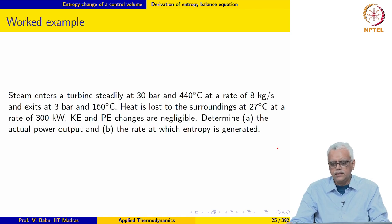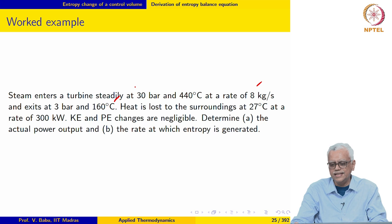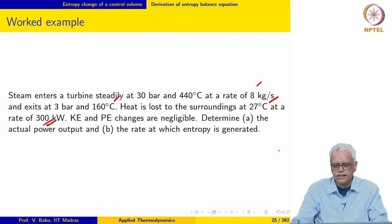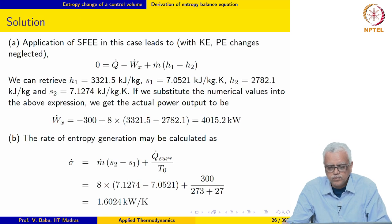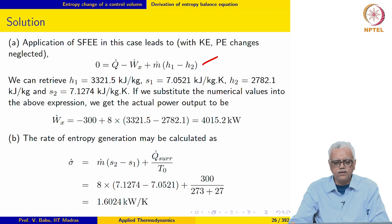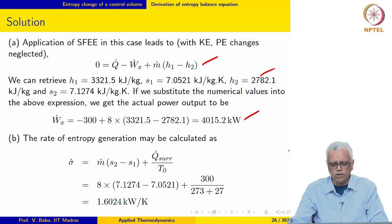Next example: steam enters a turbine steadily at 30 bar, 440°C at a rate of 8 kg/s and exits at 3 bar, 160°C — superheated at both inlet and exit. Heat is lost to surroundings at 27°C at a rate of 300 kW. KE and PE changes are negligible. Applying the steady flow energy equation and retrieving property values, the actual power output is 4015.2 kW. Note that q_dot is not zero; it is −300 kW because heat is lost to the surroundings.